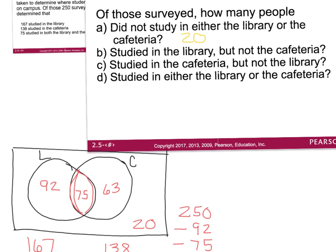Second question: of those surveyed, how many people studied in the library but not the cafeteria? Those are the people in the library bubble but not the overlapping section, which is 92. Third question: how many studied in the cafeteria but not the library? You want to be in the cafeteria bubble but not the overlapping area, so that would be 63.